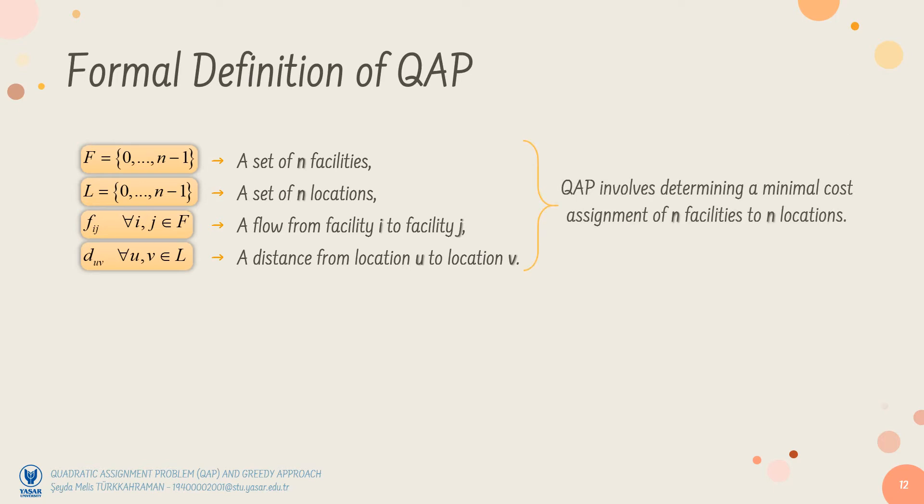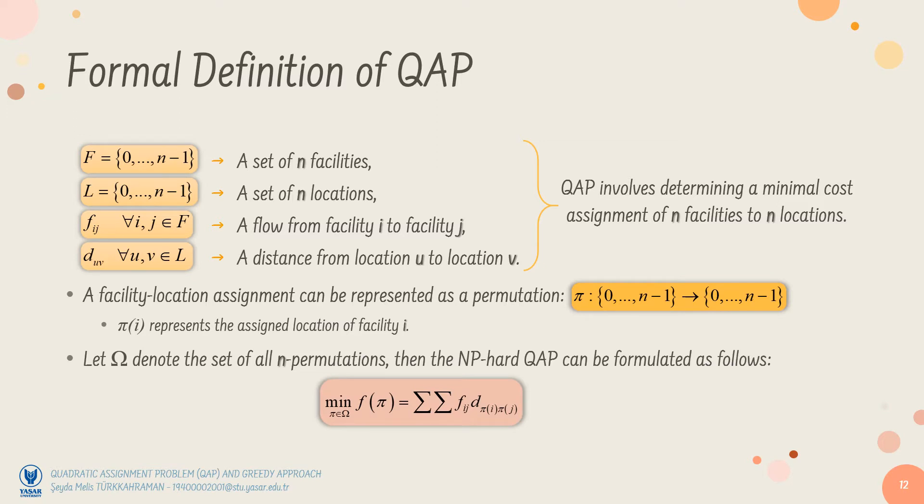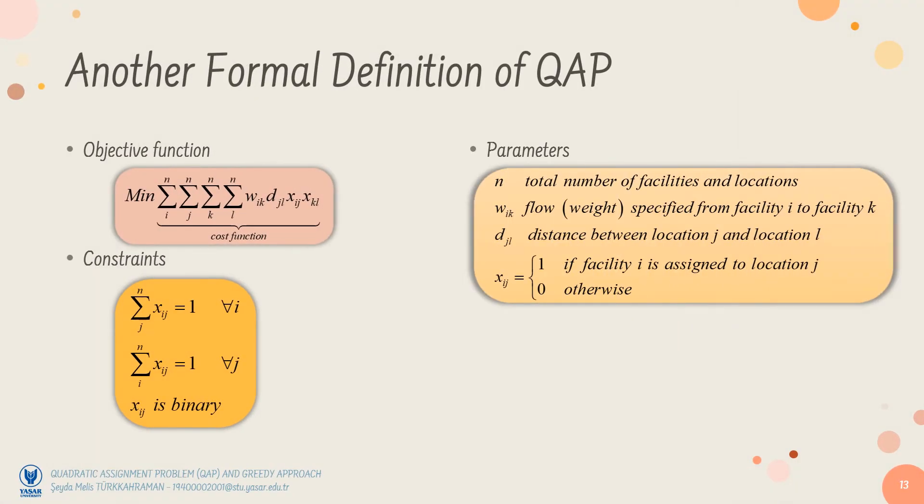QAP involves determining assignment of N facilities to N locations with a minimal cost. Clearly, a facility location assignment can be represented by a permutation PI, such that PI of I represents the assigned location of facility I. Let the omega denote the set of all N permutations, then the NP-hard QAP can be formulated as the sum of the flows multiplied by the corresponding distances. Here is another similar formulation with different notations. You can examine it by pausing the video.